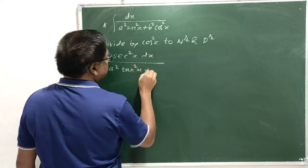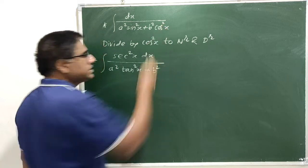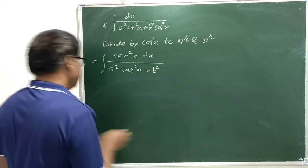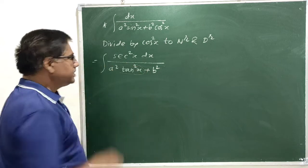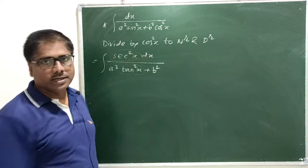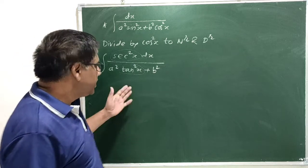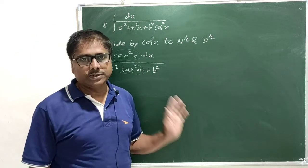Tan square x plus b square into cos square x by cos square x is just 1. Now, here you can see in the denominator we have tan x function, and its derivative is available in the numerator, that is sec square x. Therefore, here now we can go for substitution.